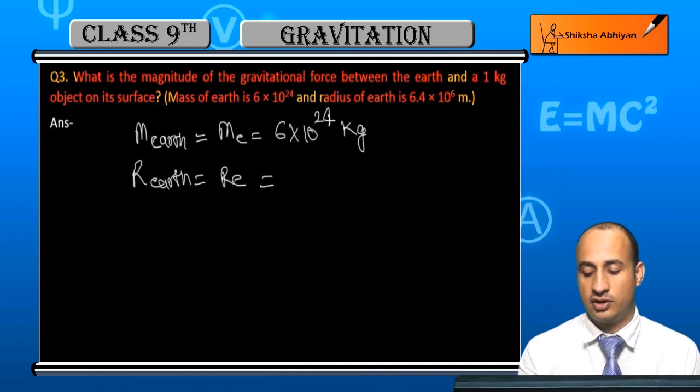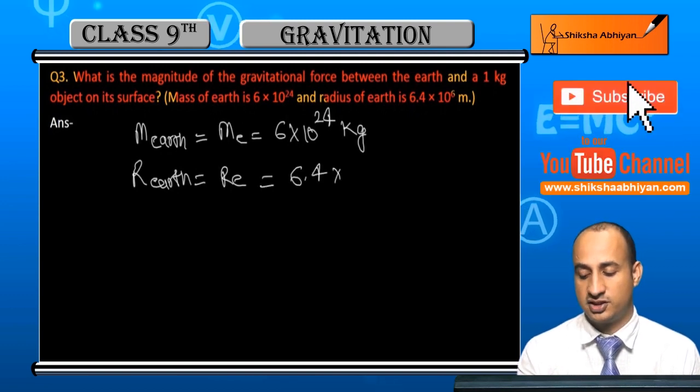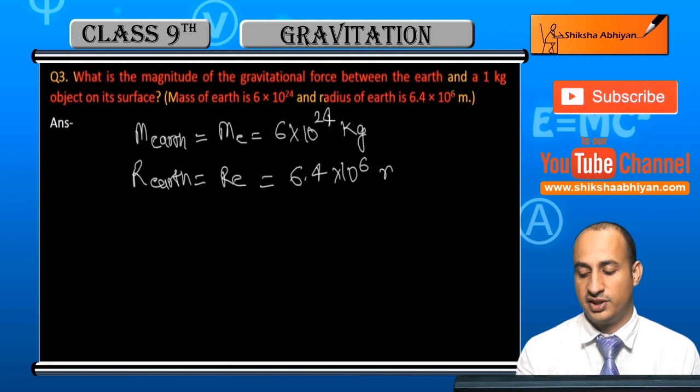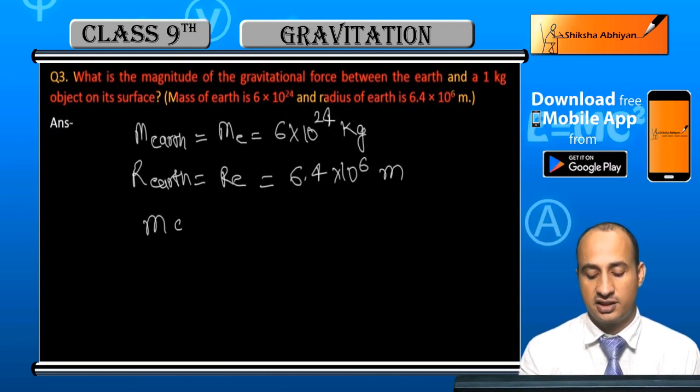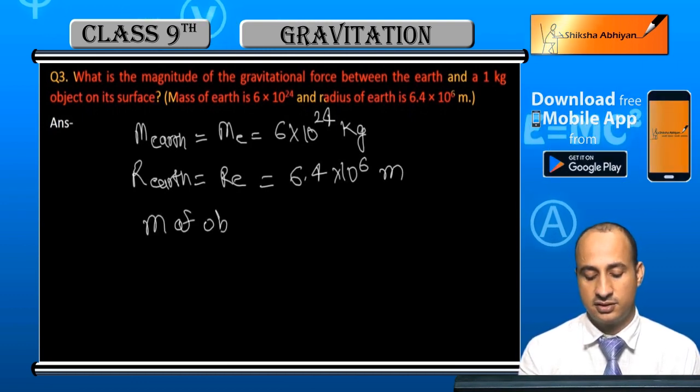Radius of earth is equal to 6.4×10^6 meters. Here we have given mass of object, this is m_o.